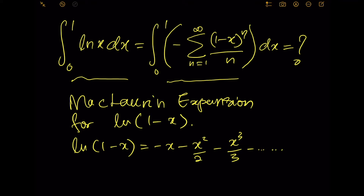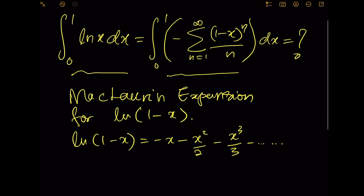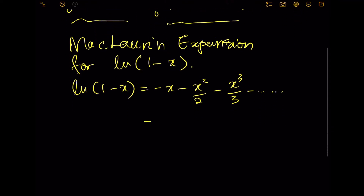The reason I need to introduce this is because there's no direct way to obtain ln(x) from the McLaurin expansion, so we will obtain it indirectly. ln(1 minus x) equals negative x minus x squared over 2 minus x cubed over 3, which is the sum from n equals 1 to infinity of negative x to the power n over n.